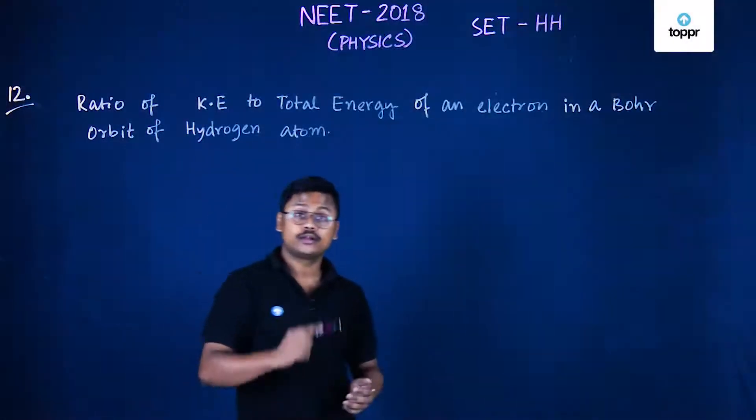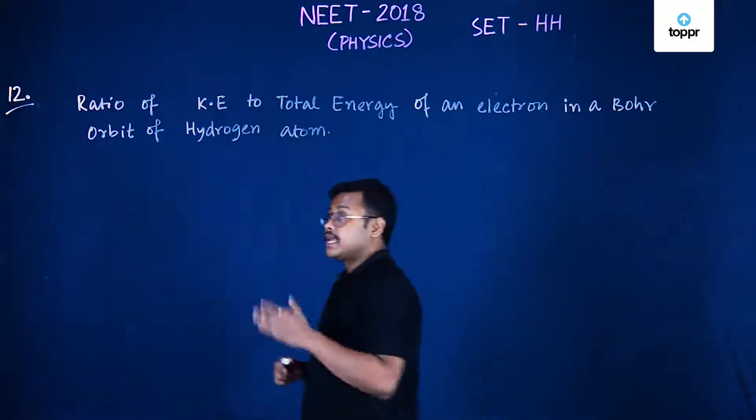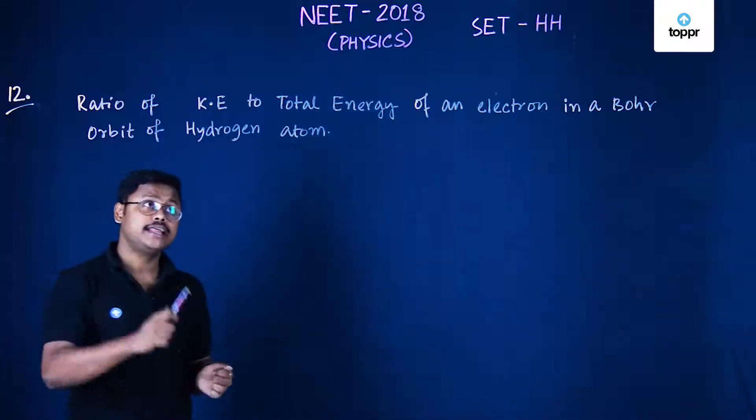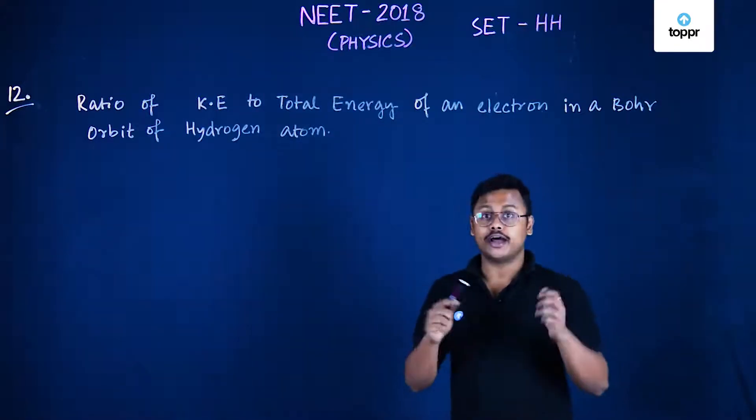Hello students, now let us look at question number 12. It has been asked in this question that calculate the ratio of kinetic energy to total energy of an electron in a Bohr orbit of hydrogen atom.